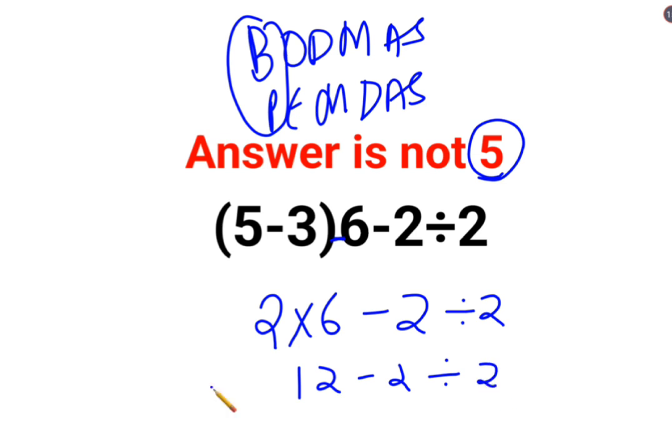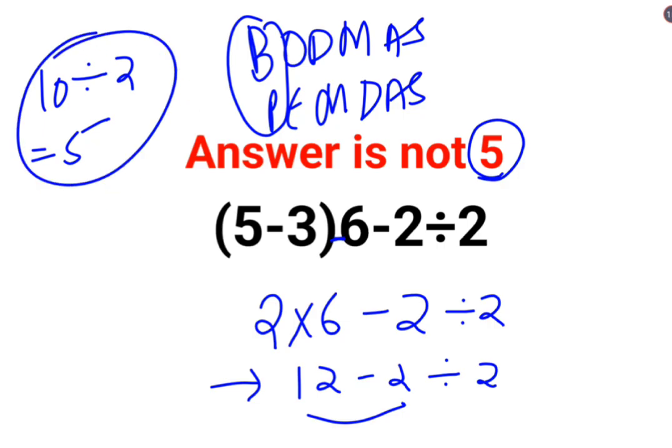Till here, everything is fine. But at this point, people think that this is too convenient. 12 minus 2 is 10 divided by 2. The answer is 5. No. This entire step went for a toss. This is not right.